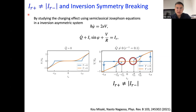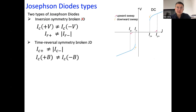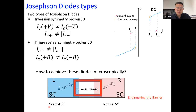In short summary, there are two types of Josephson diode effect. The first is the inversion-symmetry-broken Josephson diode effect, demonstrated by the critical current in the positive and negative voltage being unequal, or the return current in positive and negative directions being unequal. There is also the time-reversal-symmetry-broken Josephson diode effect, where the critical current in the positive and negative current directions are not equal. One can also generalize this to the critical current in positive and negative B-fields being unequal. Since most Josephson junctions use conventional superconductors, the key is to engineer the tunnel barrier.